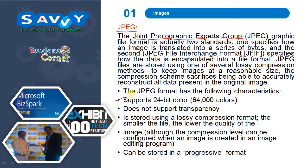The JPEG format has the following characteristics: supports 24-bit color (64,000 colors), does not support transparency, and is stored using a lossy compression format. The smaller the file, the lower the quality of the image. The compression level can be configured when an image is created in an image editing program, and it can be stored in a progressive format.